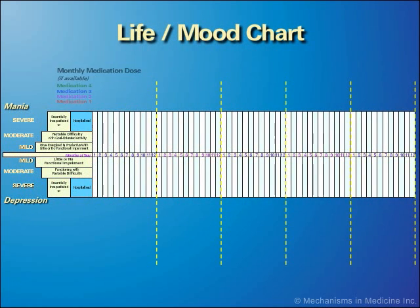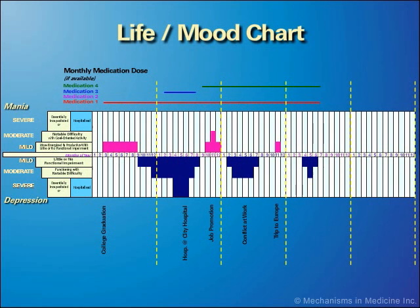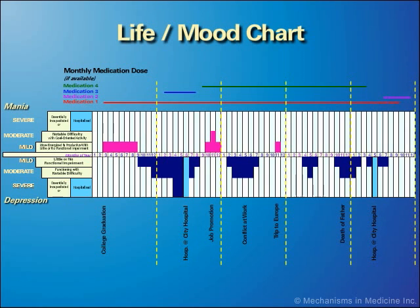Depicted here is a life chart, or mood chart, which follows the patient's lifetime history of mood episodes. This permits the identification of mood episodes that are the most prevalent and important to prevent. In this patient, as with many patients with bipolar disorder, depressive episodes become the more prominent aspect of the illness as the person ages.